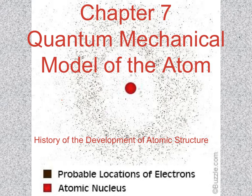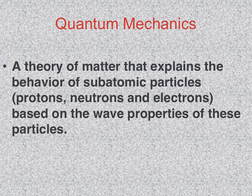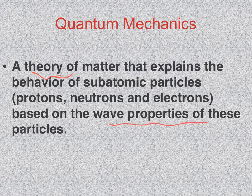This is the first lecture from Chapter 7, titled Quantum Mechanical Model of the Atom, but it's really all about the electron. First, a definition of quantum mechanics: basically, quantum mechanics is a theory which bases the behavior of subatomic particles like the electron on the wave properties of the electron.